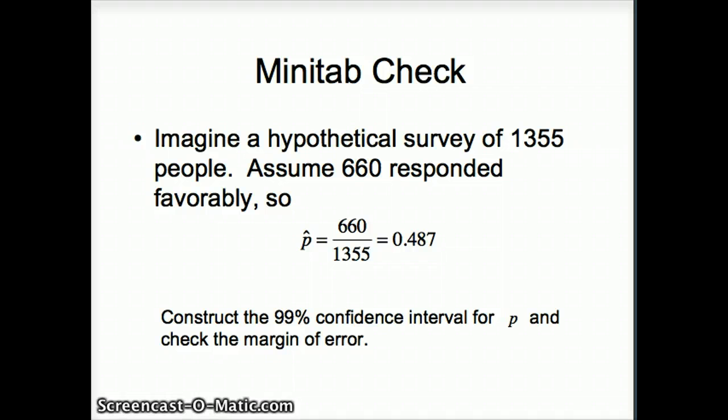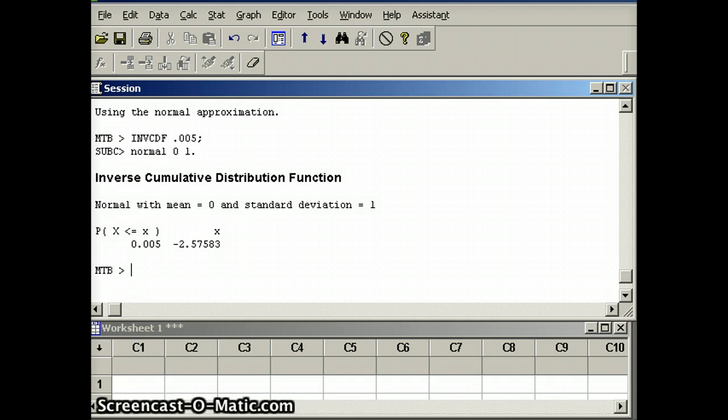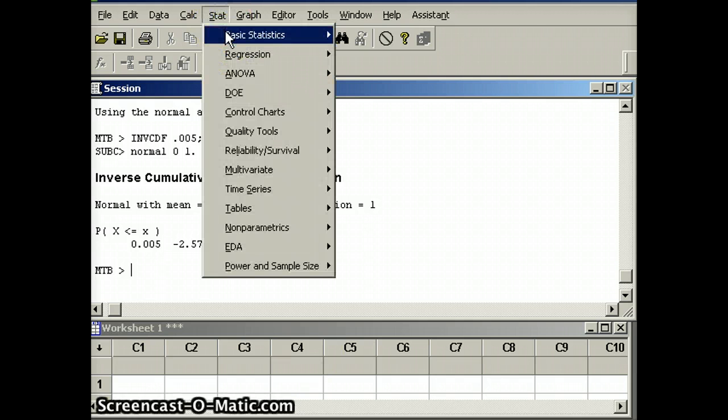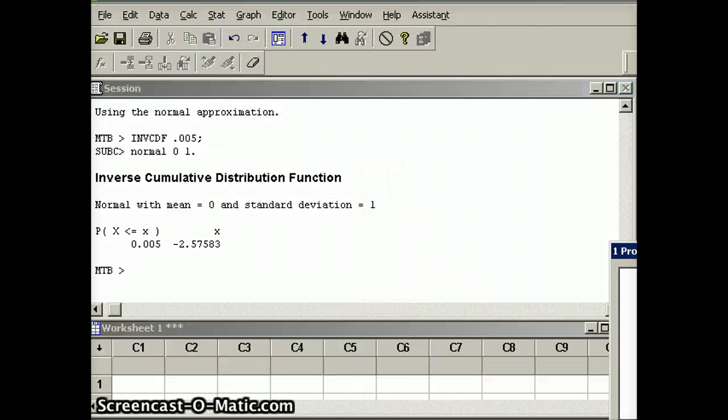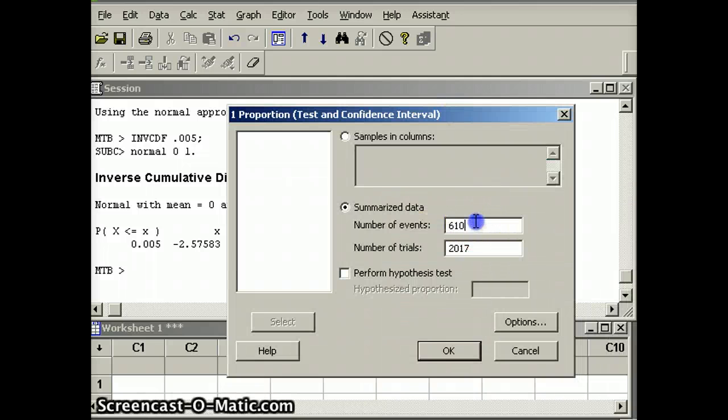So let's do that. Let's go to Minitab and see how that is going to behave. 660 out of 1355. So we're going to go to Stat, Basic Statistics, One Proportion. And the numbers we had before are still there. So we're going to go ahead and put in 660 out of 1355.